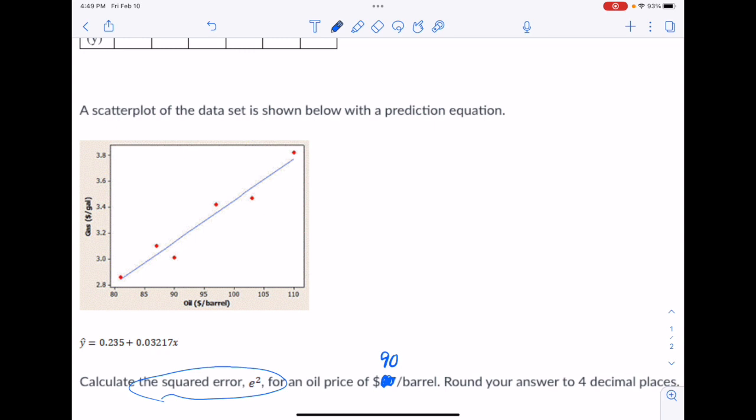So they want E squared. How do we get that? Well, E is Y minus Y hat, so E squared is Y minus Y hat squared. So we need to figure out the Y and the Y hat, plug them in, round to four decimal places. That's going to be our answer.